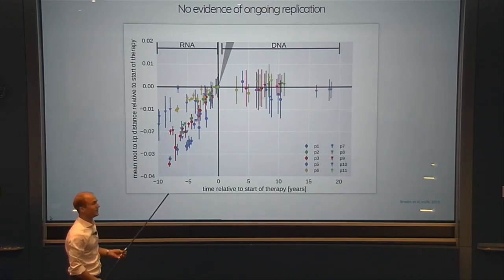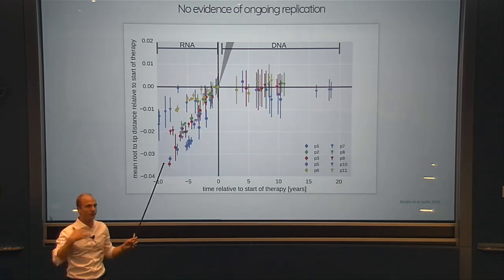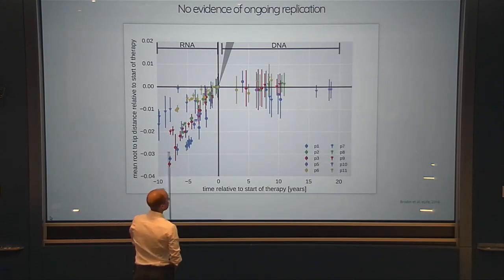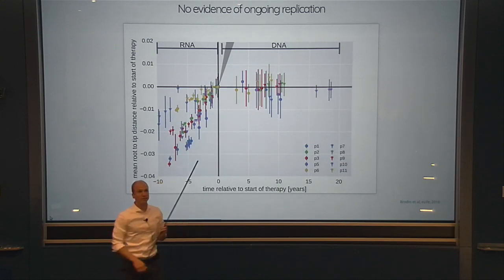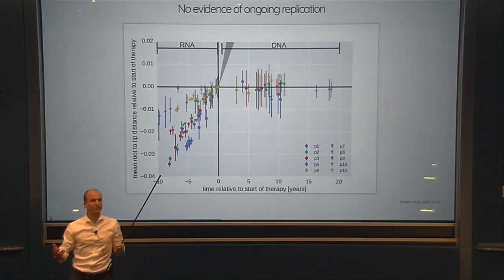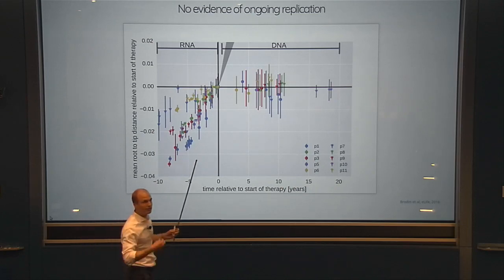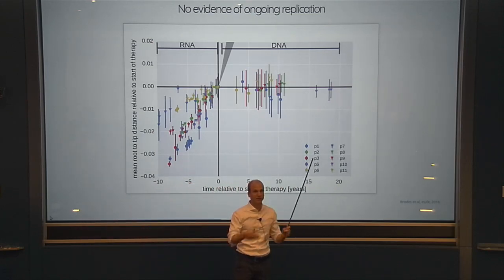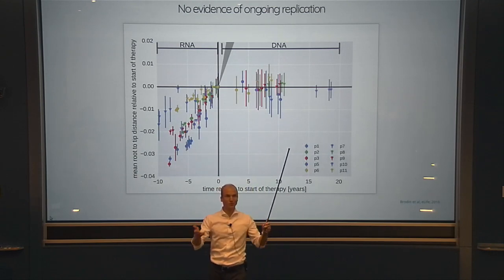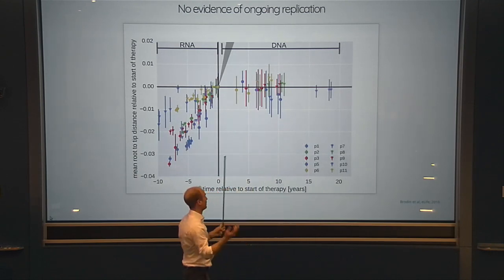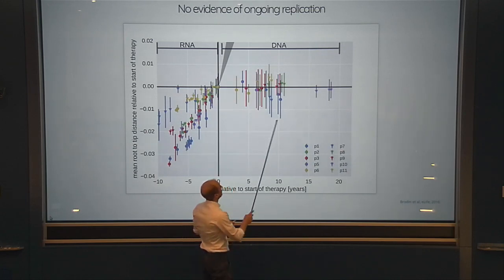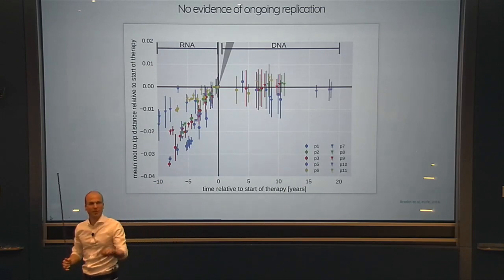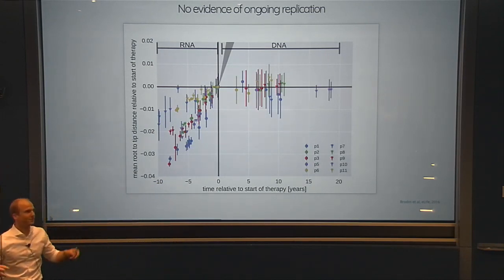At least in what's circulating in the blood, there is no evidence of ongoing replication after treatment. This is good news: if people figure out a way to flush out this reservoir — either by activating the latent virus to produce particles and kill the cell, or by cutting it out — there doesn't seem to be a pocket where it's replicating and replenishing. It's just stuck there.